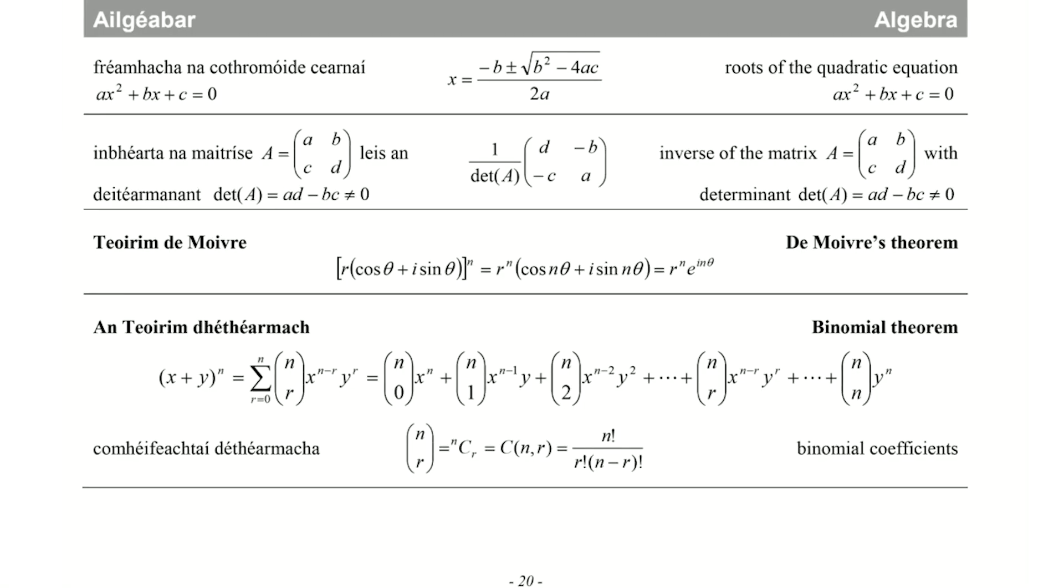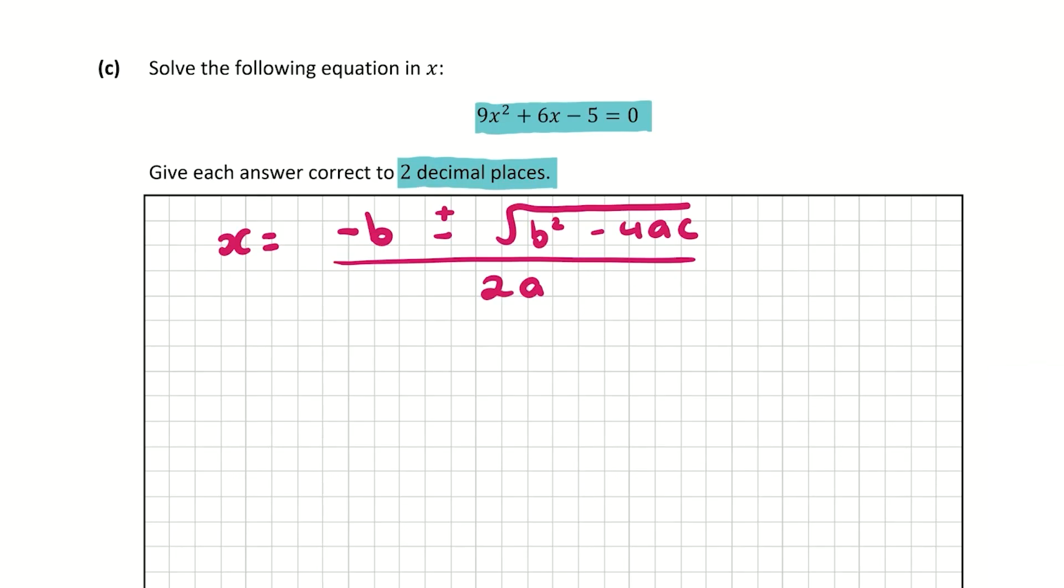So here on page 20 of the log tables, we have the minus b formula. So the roots of the quadratic equation: x equals minus b plus or minus root b squared minus 4ac over 2a. So I've just rewritten the formula here. My a value is going to be 9, so that's the coefficient of x squared. My b value is going to be 6, the coefficient of x. And my c value is going to be minus 5.